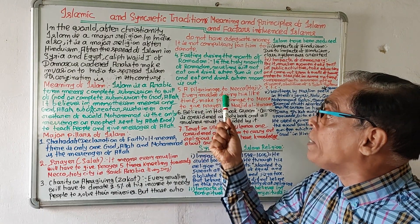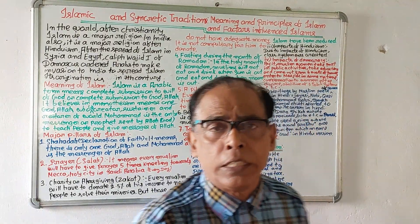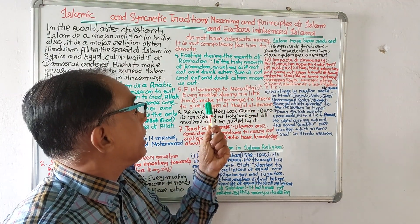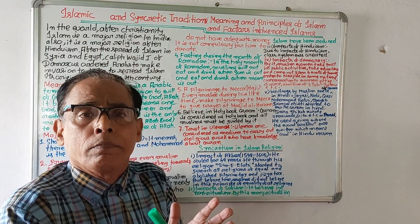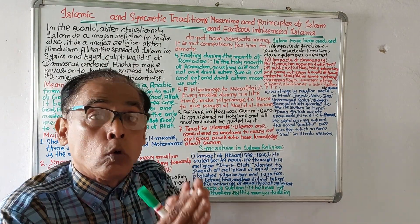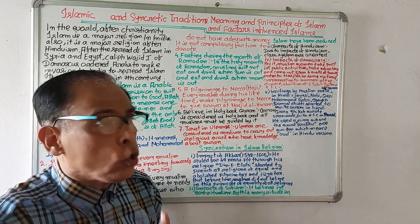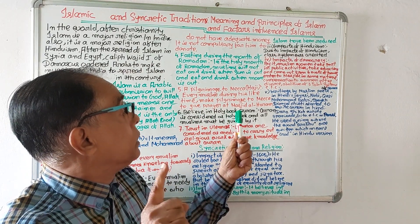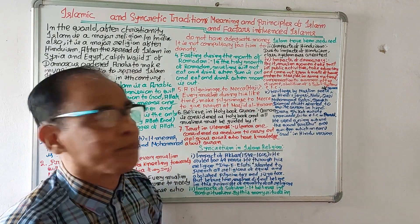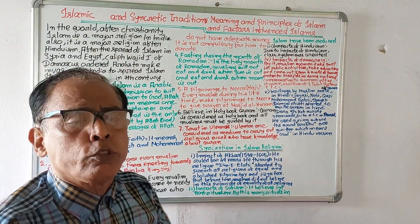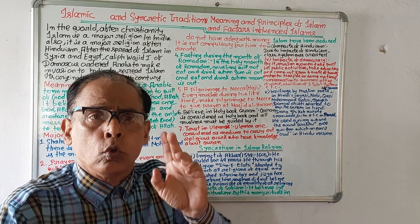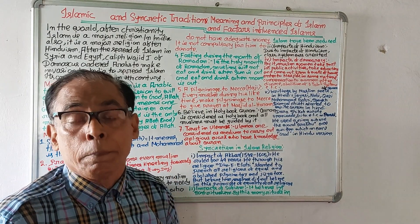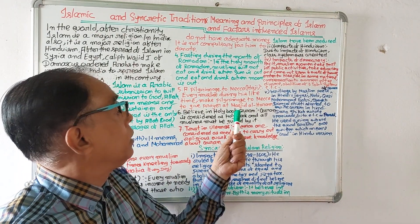Number five is pilgrimage to Mecca, also known as Hajj. It means every Muslim during his lifetime will have to go to Mecca once to give prayer at Masjid al-Haram. So every Muslim must go once to Mecca for pilgrimage to pay his prayer at Masjid al-Haram.